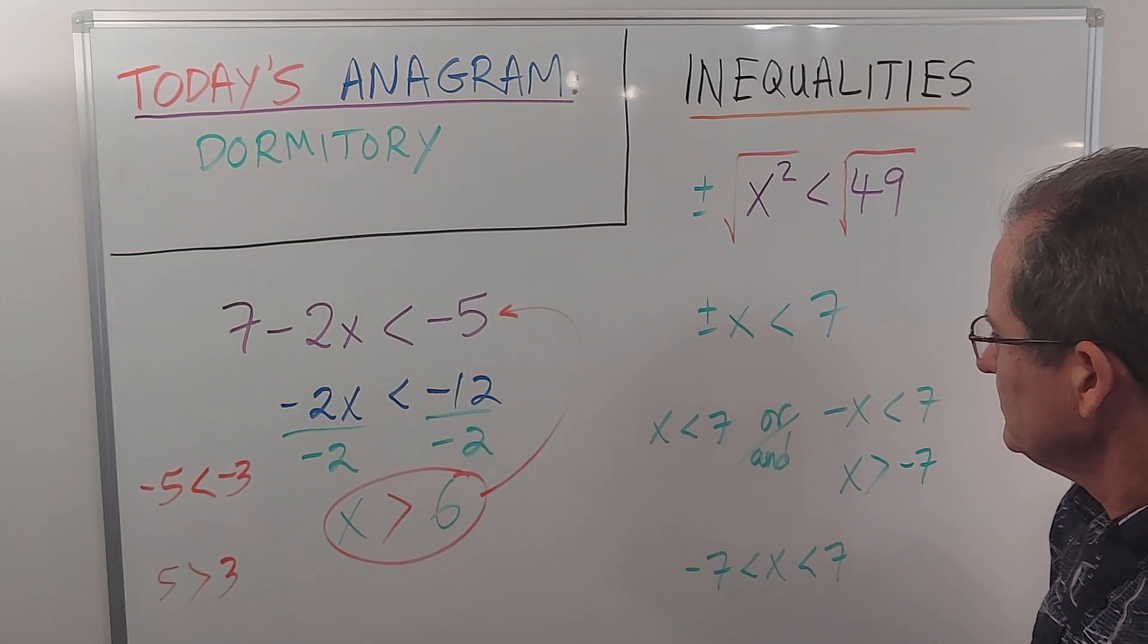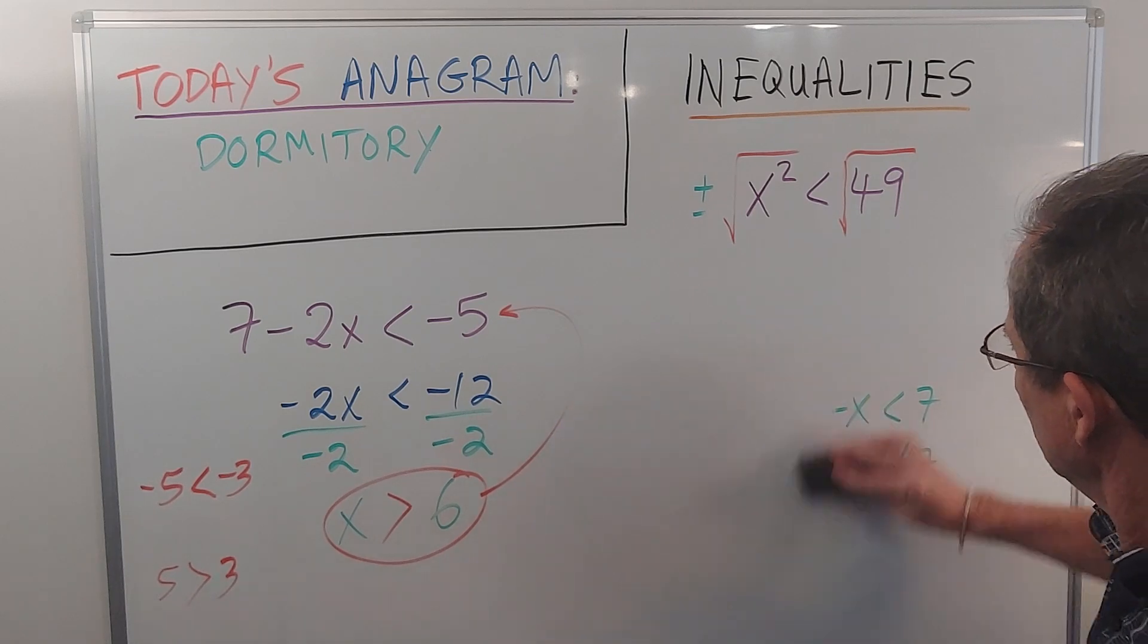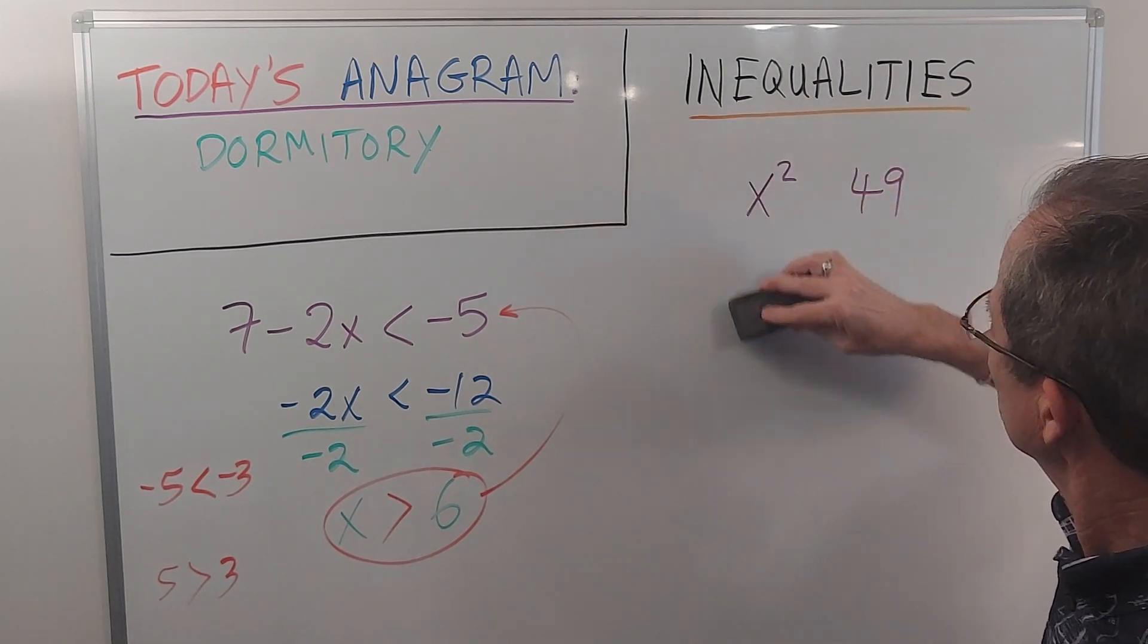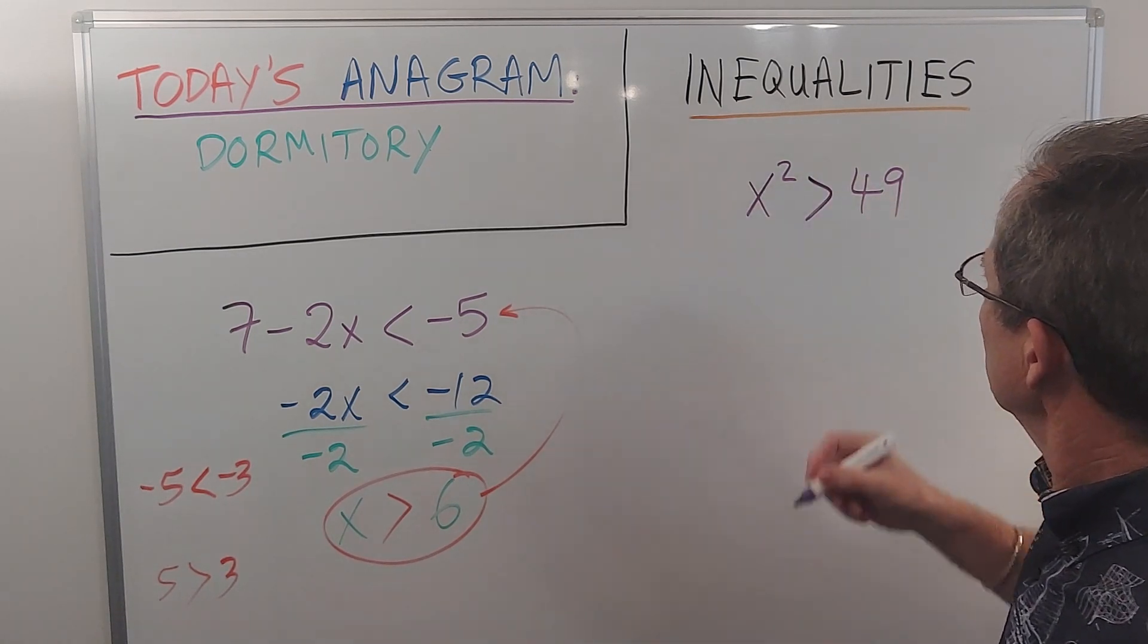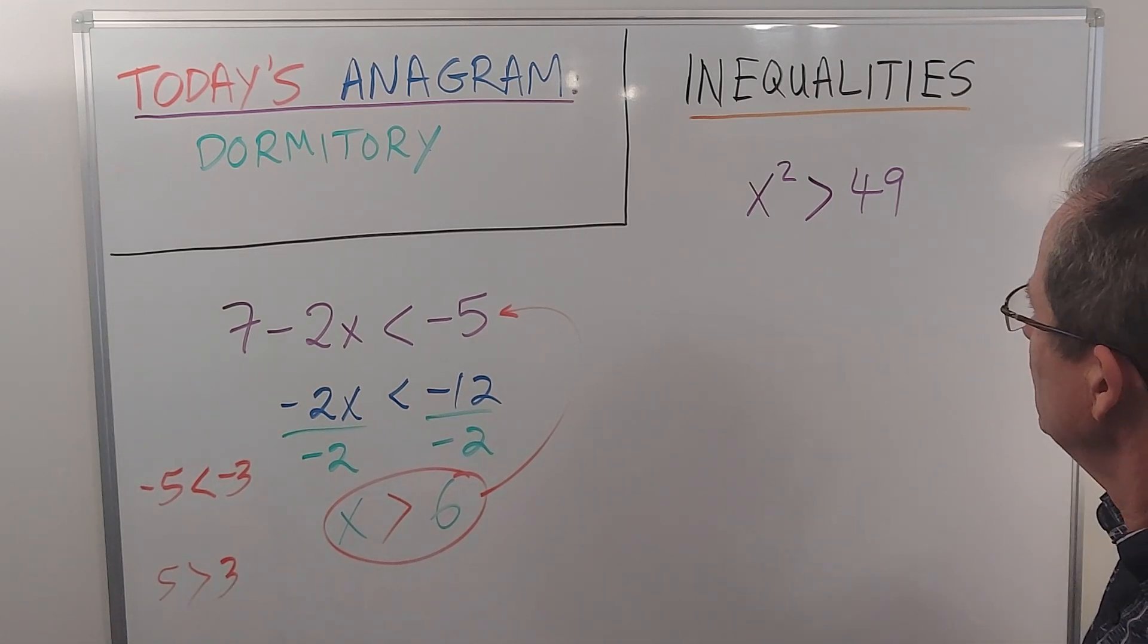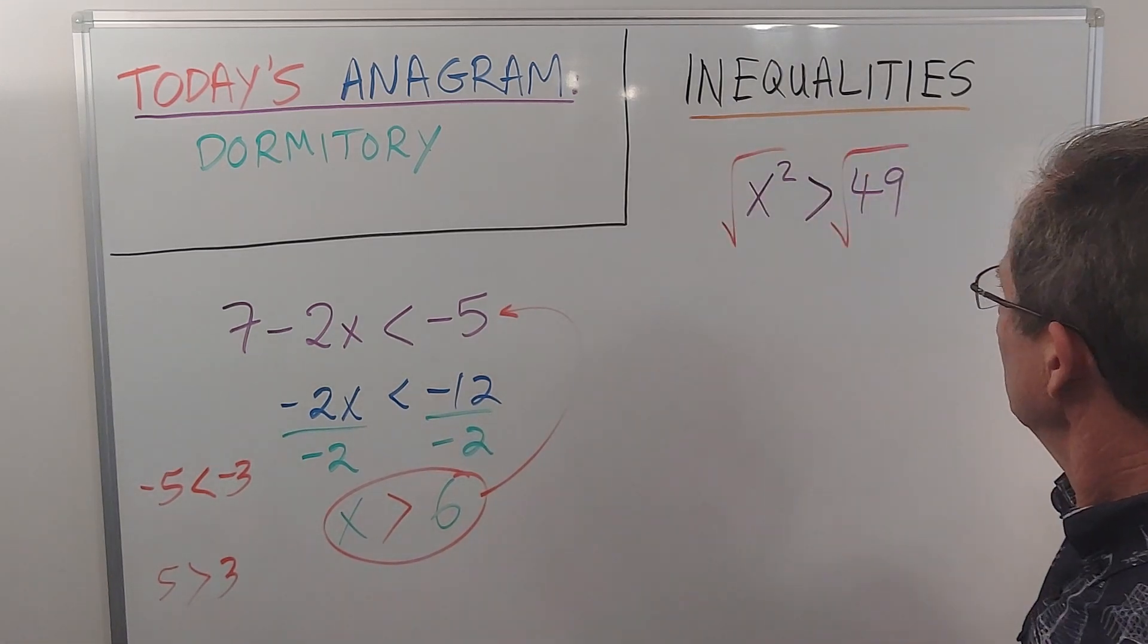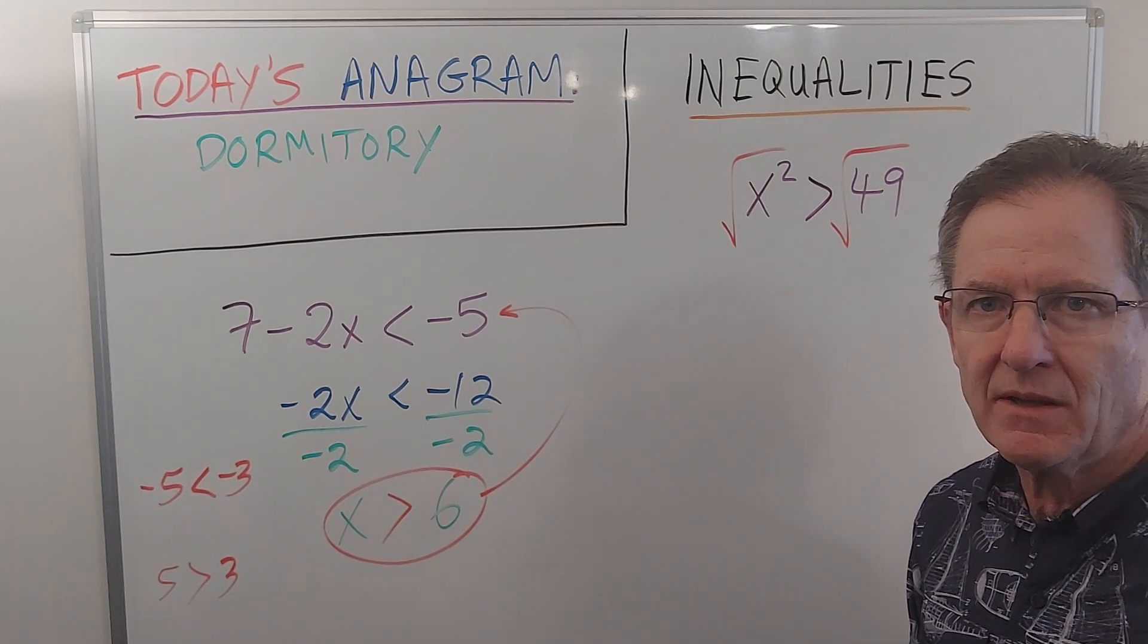Now let's go back and change it to... well, let me erase the square roots as well. Let's say we have x squared is greater than 49. Same idea. If I take the square root of both sides, I'm on my way to getting the right answer, but I've got to put plus or minus on one side or the other.